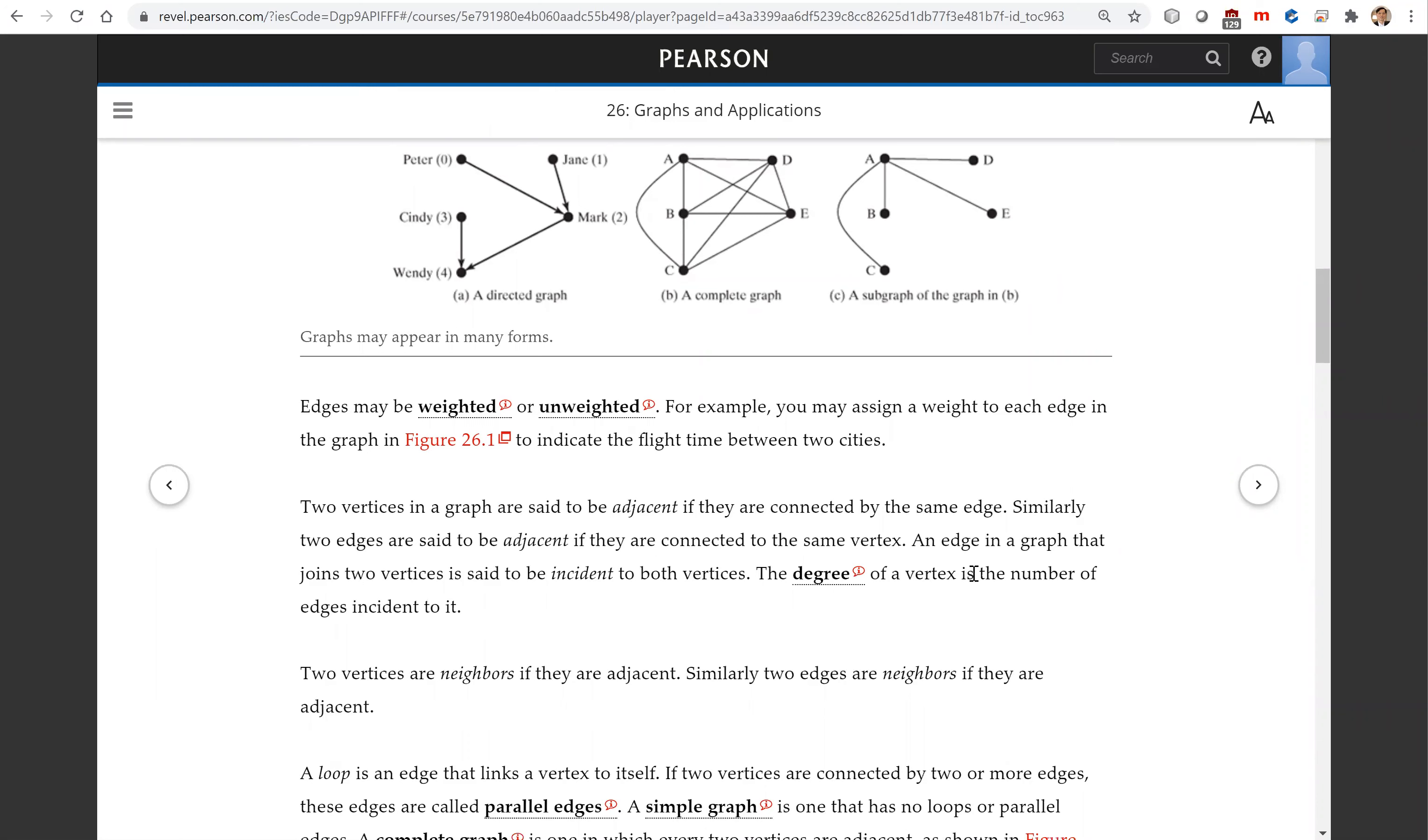An edge in a graph that joins two vertices is said to be incident to both vertices. The degree of a vertex is the number of edges incident to it. So what is the degree of A? It's four edges. What is the degree of B? There's only one edge.